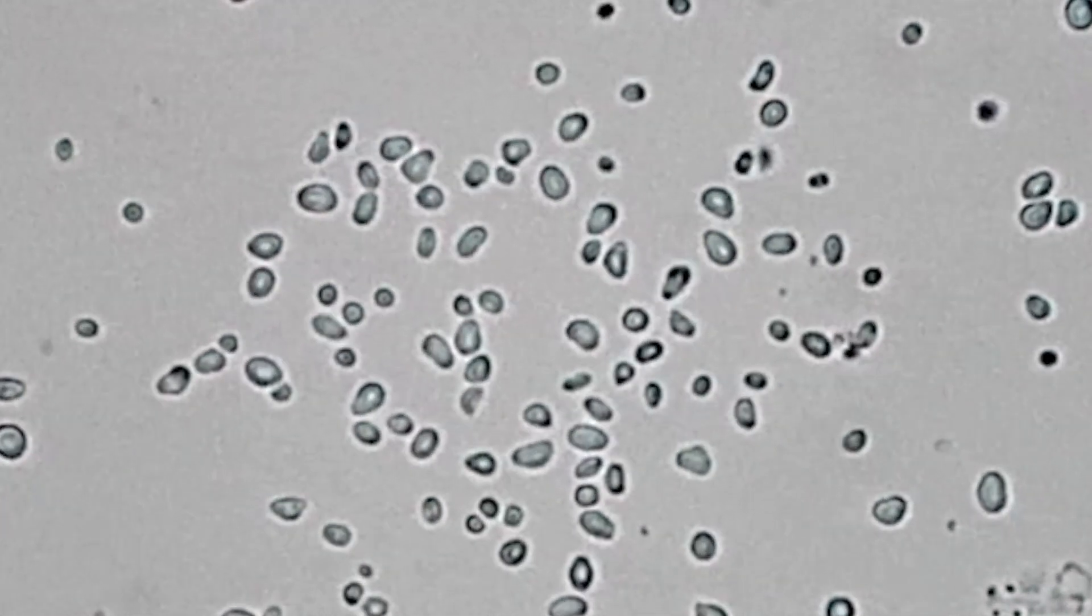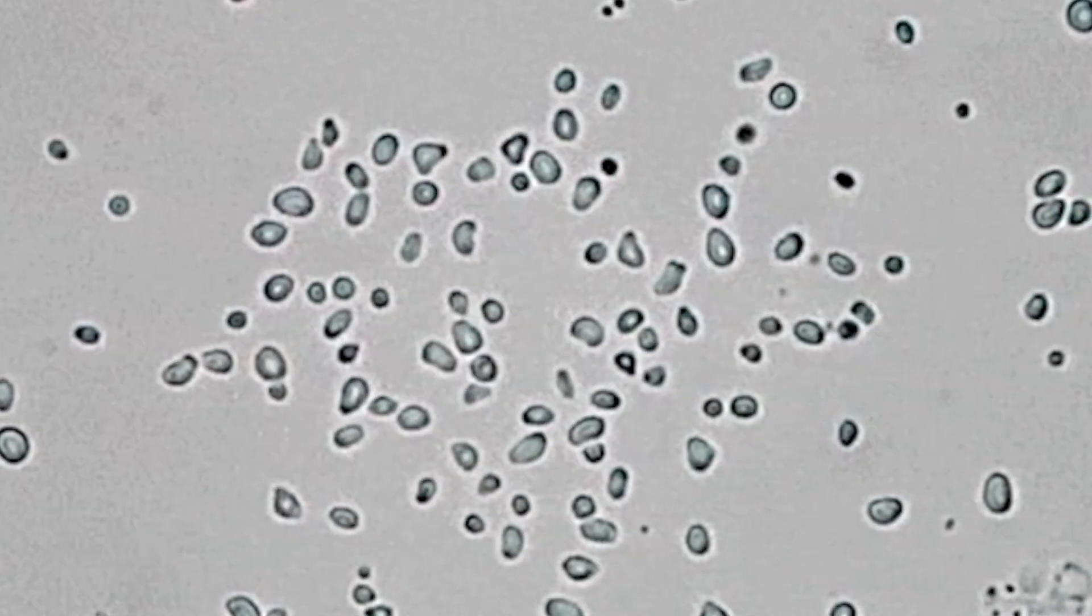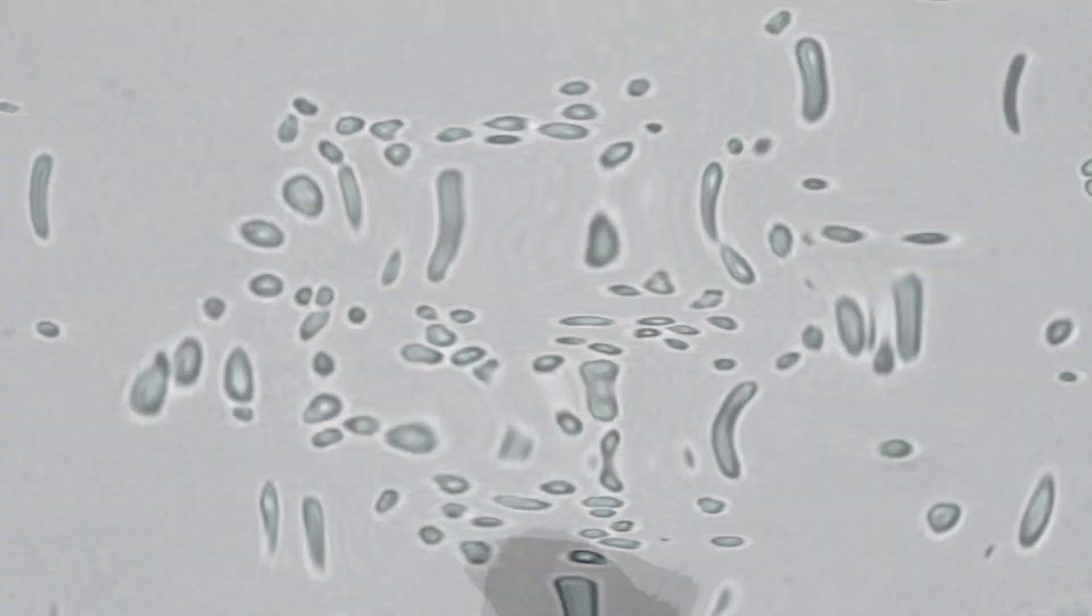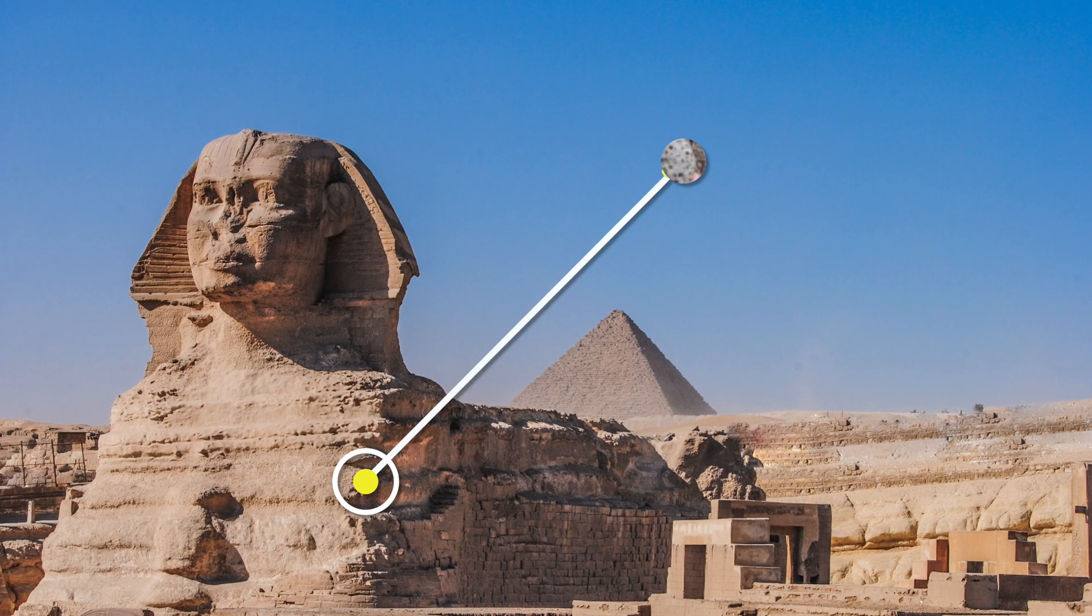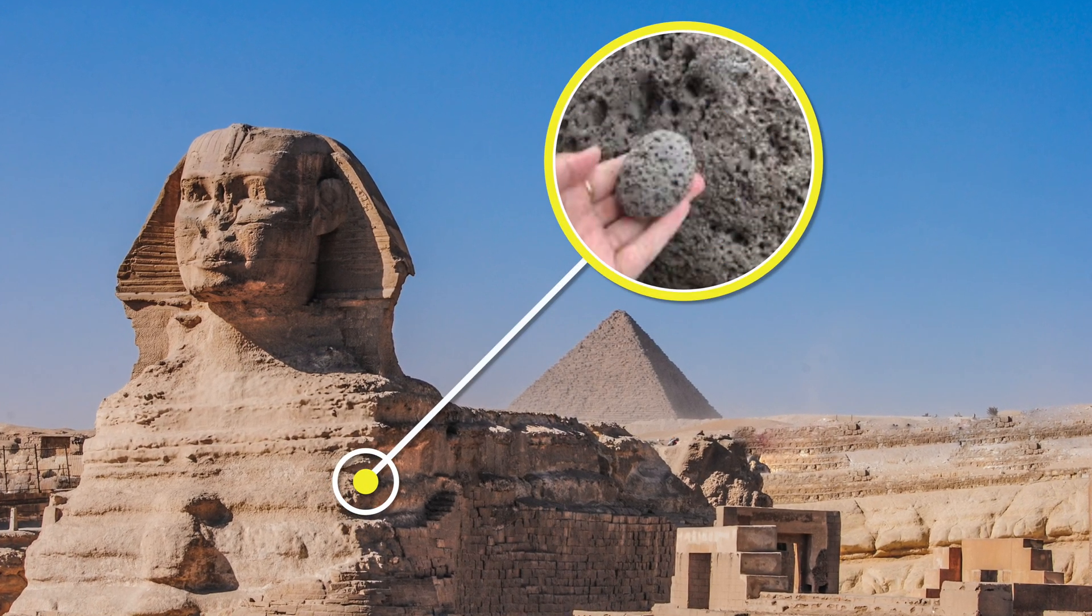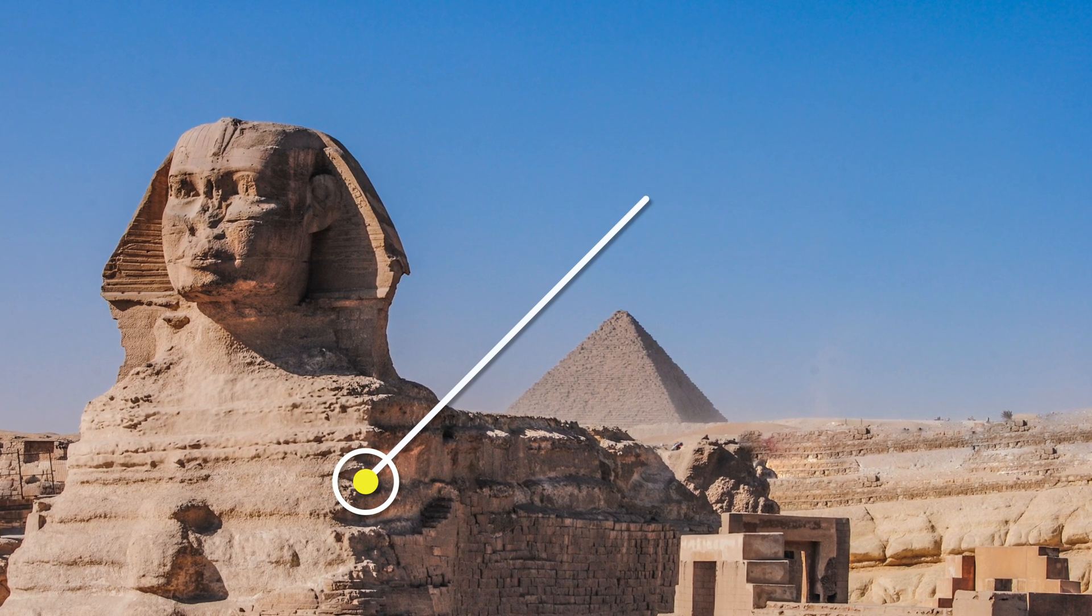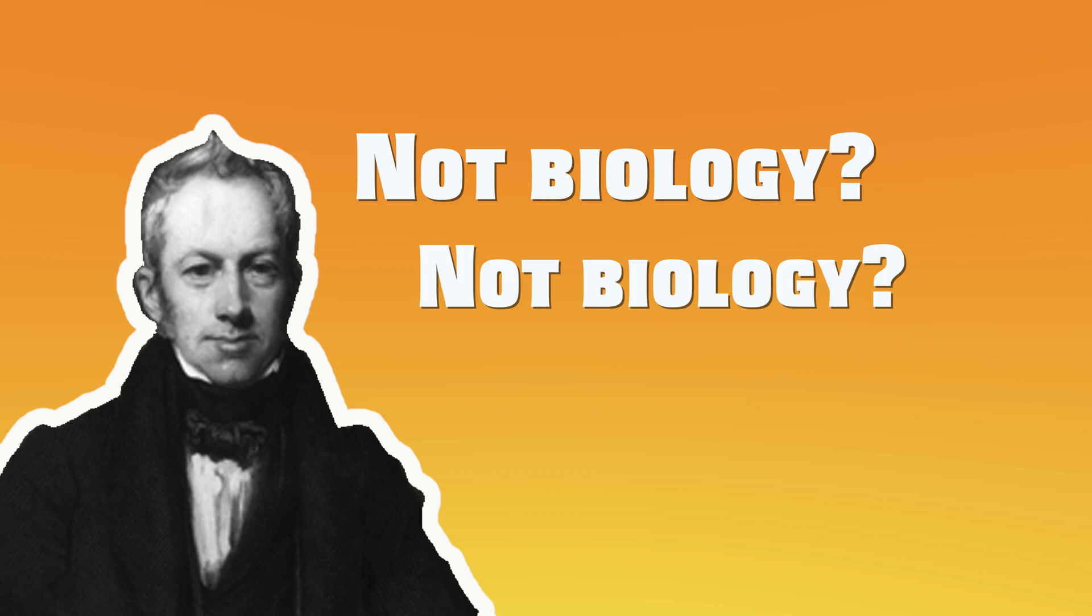Further studies showed that Brownian motion could be observed not only with particles of organic substances but also with chips of glass, particles of smoke, or even in fluid-filled vesicles in rocks from the Great Sphinx. Brown has shown that whatever it was, this movement was not biology, it was physics.